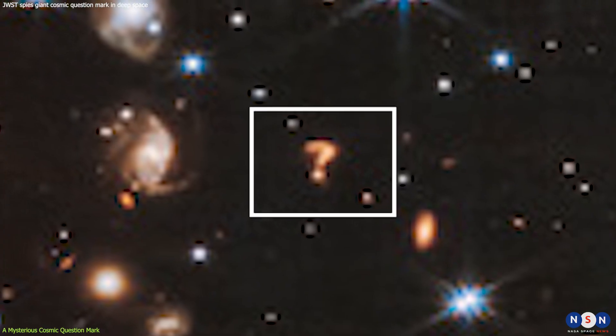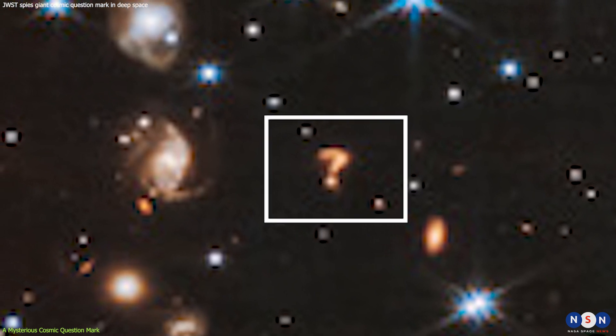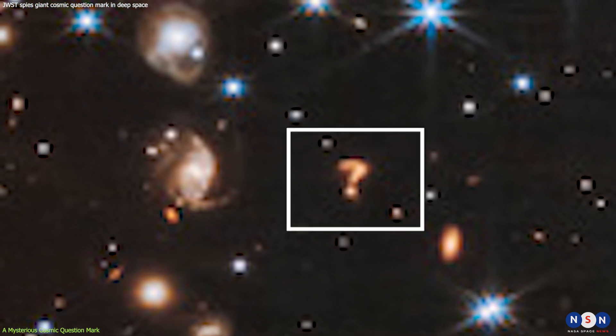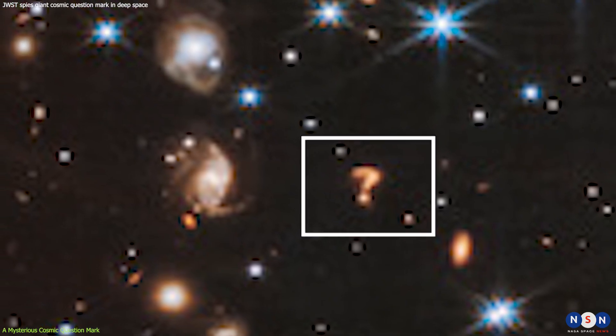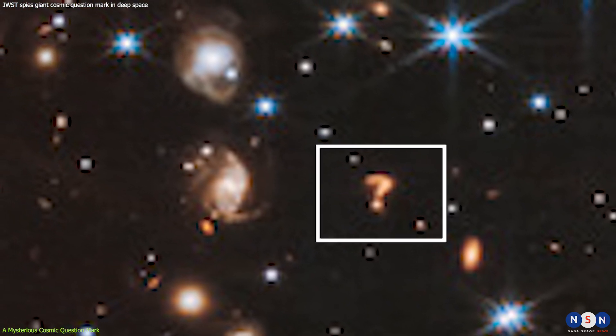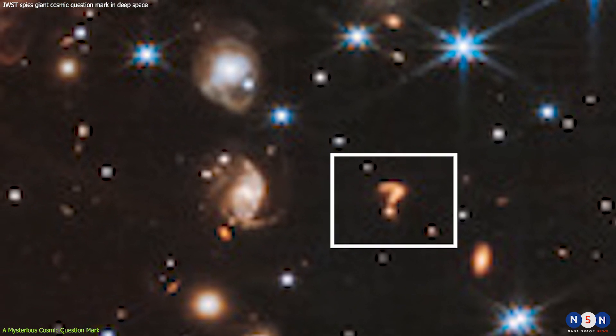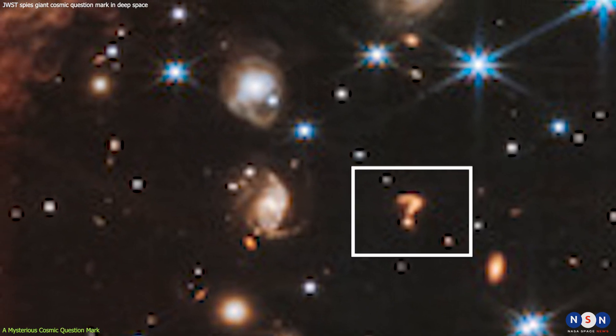This mysterious galaxy may be an example of gravitational lensing by dark matter. Some astronomers think that the bright dot at its core is actually an image of another galaxy behind the cluster, magnified by a clump of dark matter near the question mark galaxy.